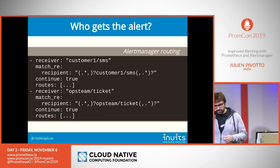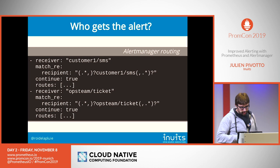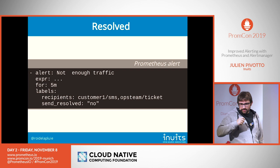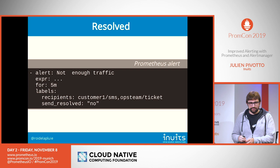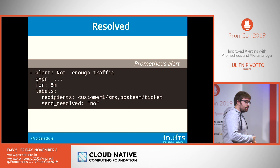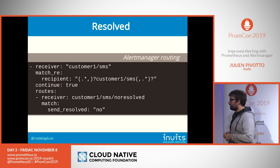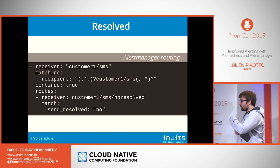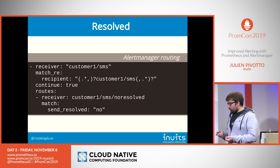Not all alerts should send a resolve notification, because it's kind of hard to know when something is really resolved. Sometimes you just say 'hey, we think you are down' but we won't tell you when we think you are up again. For those alerts, we add the label 'send_resolved: no'. When the alert manager routing sees that label, it sends to the receiver variant with no resolve. When writing the alert, you still see the nice receiver name.